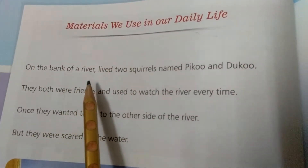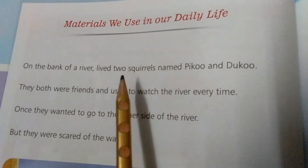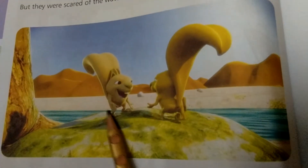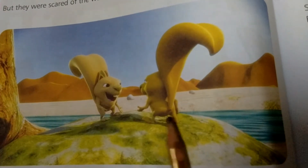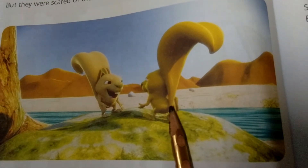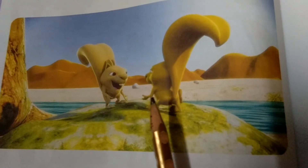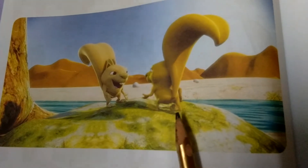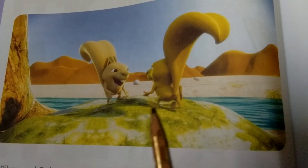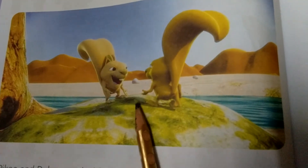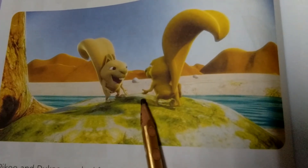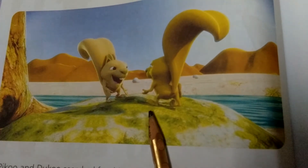In our daily life we use different kinds of materials. Different kinds of things are made up of different kinds of materials. In this picture two squirrels are there — one is Piku and another is Duku. They are both very best friends and they always go to the river. Once they wanted to go to the other side of the river, but they were scared of water.